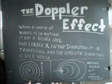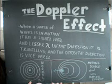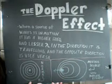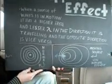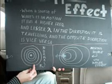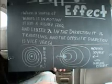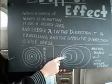We're going to learn about the Doppler effect. The Doppler effect is when a source of waves is in motion — it has a higher frequency and lesser wavelength in the direction it is traveling, and pretty much vice versa in the opposite direction, where the wavelength is greater and frequency is less. In these diagrams, it shows a normal source of sound or a wave, and over here it's the Doppler effect — the point source is moving that way, so wavelength is greater and frequency is less. Over here, towards where it's moving, wavelength is less and frequency is greater.